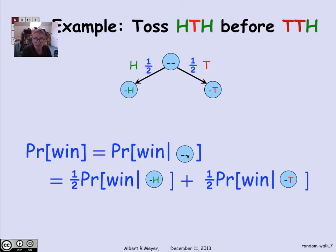That is, the probability of winning, given no prior tosses, is half the probability of winning if the first toss is an H, plus half the probability of winning if the first toss is a T. This is just an application of the law of total probability.